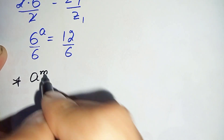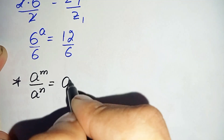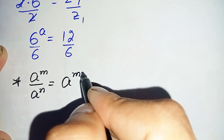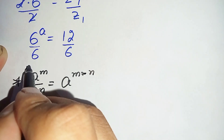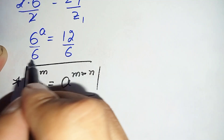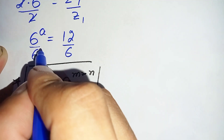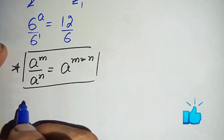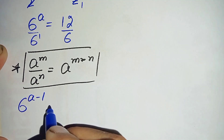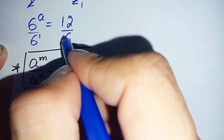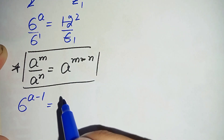The exponential property states that a raised to power m divided by a raised to power n can also be written as a raised to power m minus n. Using this property, the left hand side becomes 6 raised to power a minus 1, and on the right hand side 12 divided by 6 equals 2. So we have 6 raised to power (a minus 1) is equal to 2.